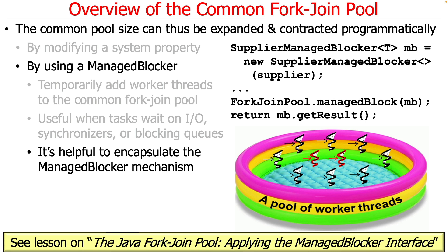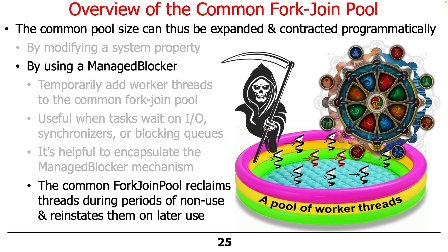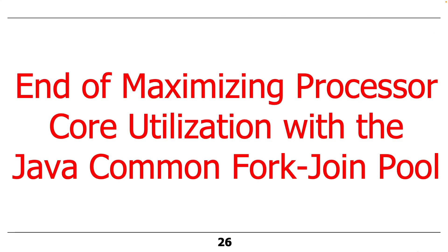It's a bit tricky to program this mechanism directly, so we provide a blocking task abstraction to make it easier. Otherwise it's very low-level code you don't want to rewrite every time you need a compensation mechanism in your use of the Common Fork Join Pool. The Common Fork Join Pool also reclaims threads when they're not being used and makes them available to be reinstated later if needed — like a cycle of life and death, allowing them to be reincarnated and reused down the road. That's the end of the first discussion of the Common Fork Join Pool; we'll cover this in more detail later.